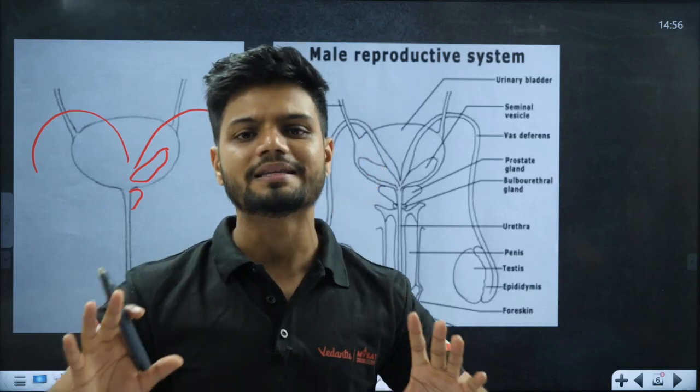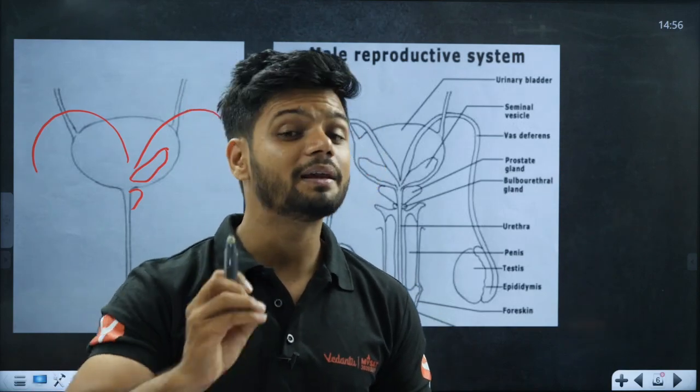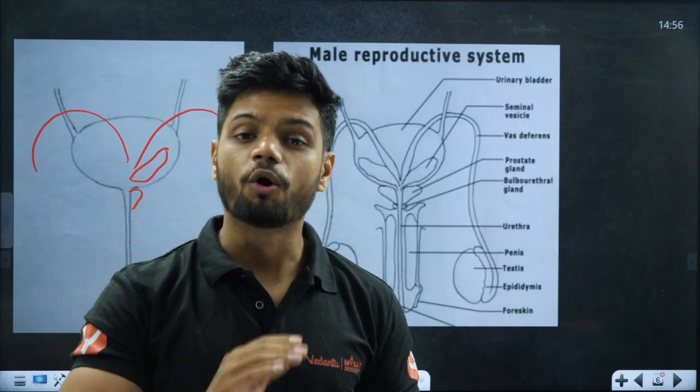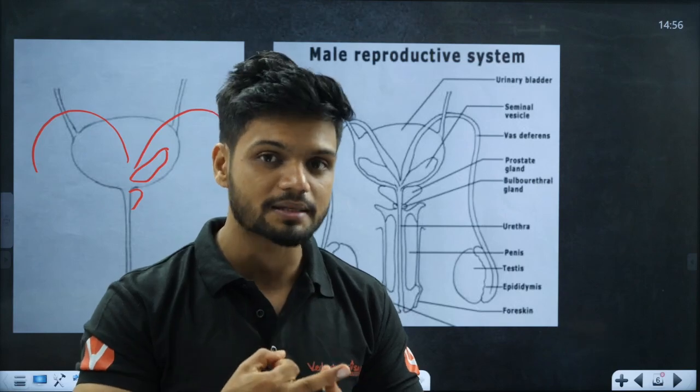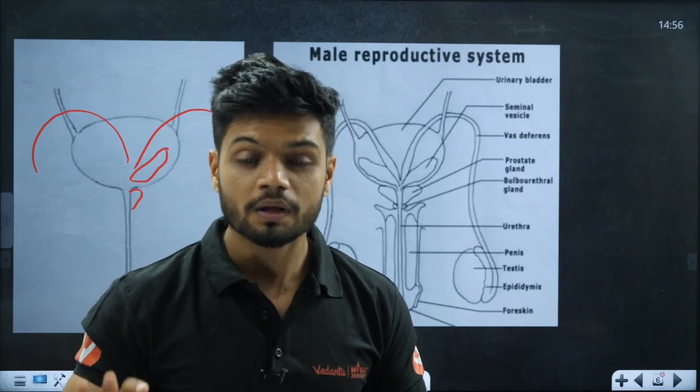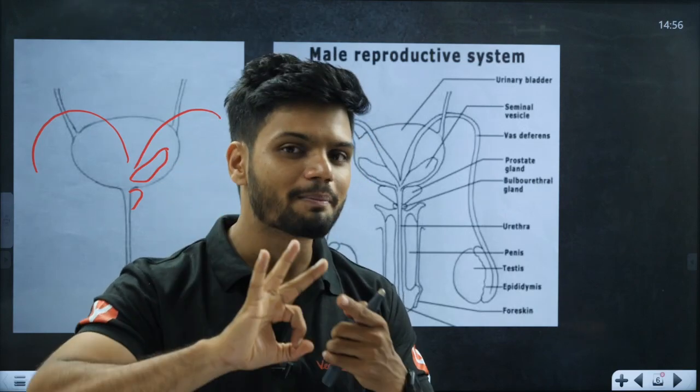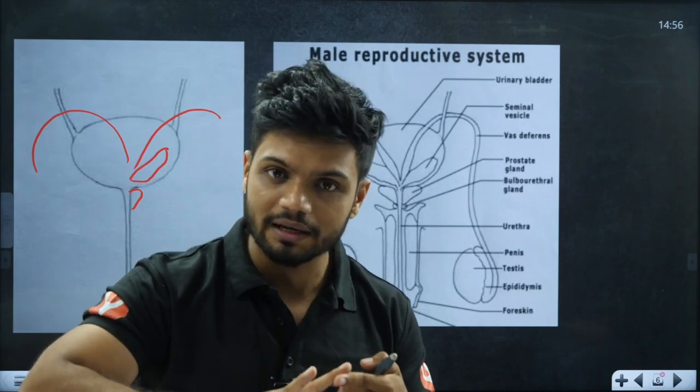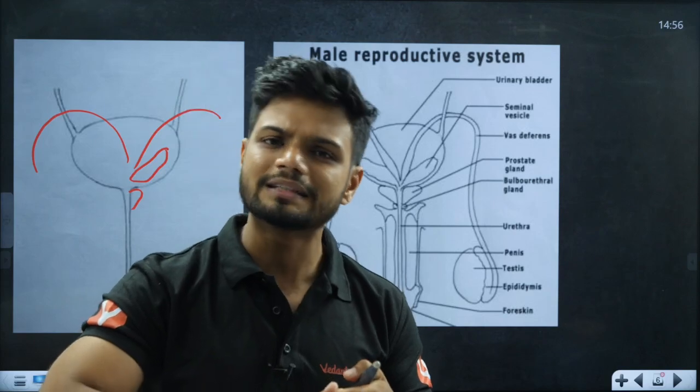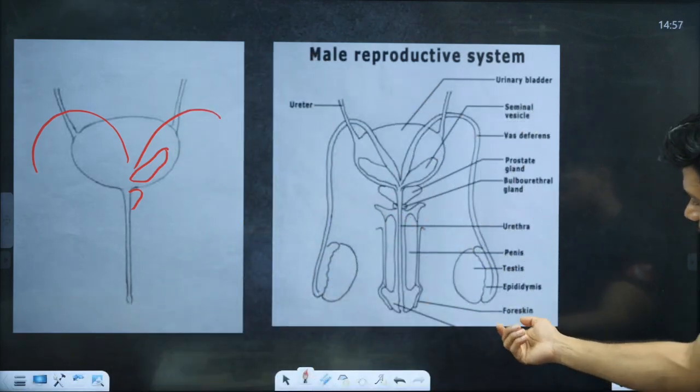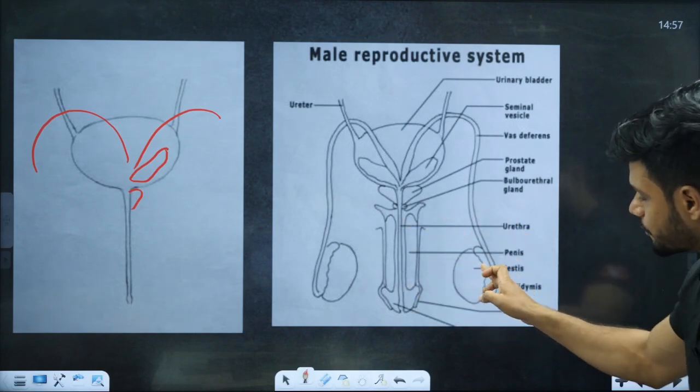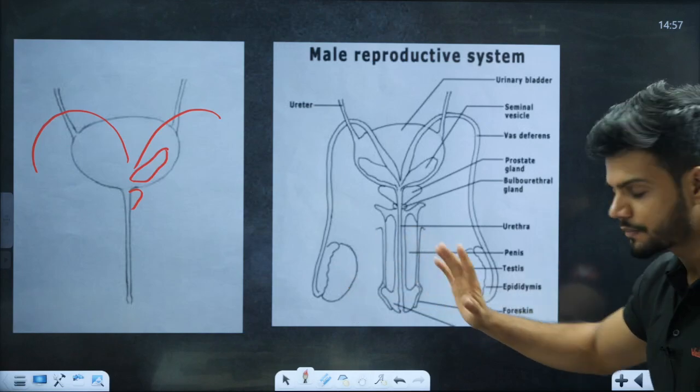Important labeling includes all the different ducts - rete testis, vasa efferentia, epididymis. Three different glands are very important: seminal vesicle gland, bulbourethral gland also called cowper gland, and prostate gland. There is loose skin called foreskin and the two testes as primary sex organs.